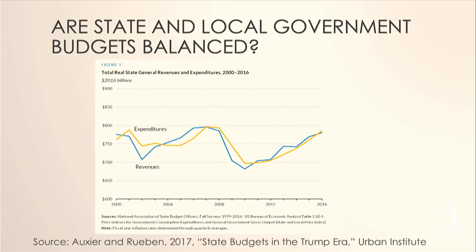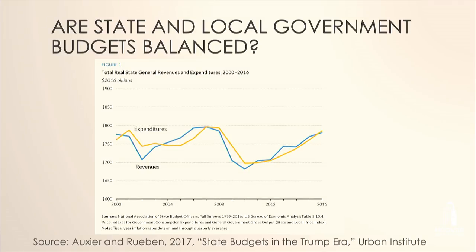This graph from the Urban Institute shows expenditures and revenues by state and local governments from 2000 to 2016. The lines move more or less in tandem. If you just looked at this, you would think the answer is yes — state and local government budgets are in fact balanced. Expenditures are about the same as revenues, even tracking each other over time, with expenditures exceeding revenues only briefly during recessions.